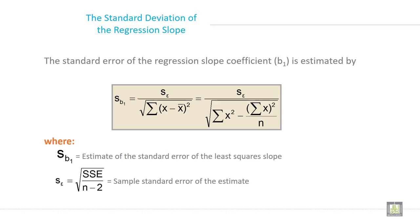The standard error of the regression slope coefficient B1 is estimated by SE divided by under root sigma x minus x bar square. And in another term, algebraically, you can write SE divided by under root summation x squared minus summation x whole square divided by n, where SB1 is the estimated standard error of the least square slope and SE equals under root SSE divided by n minus 2, the sample standard error of the estimates.